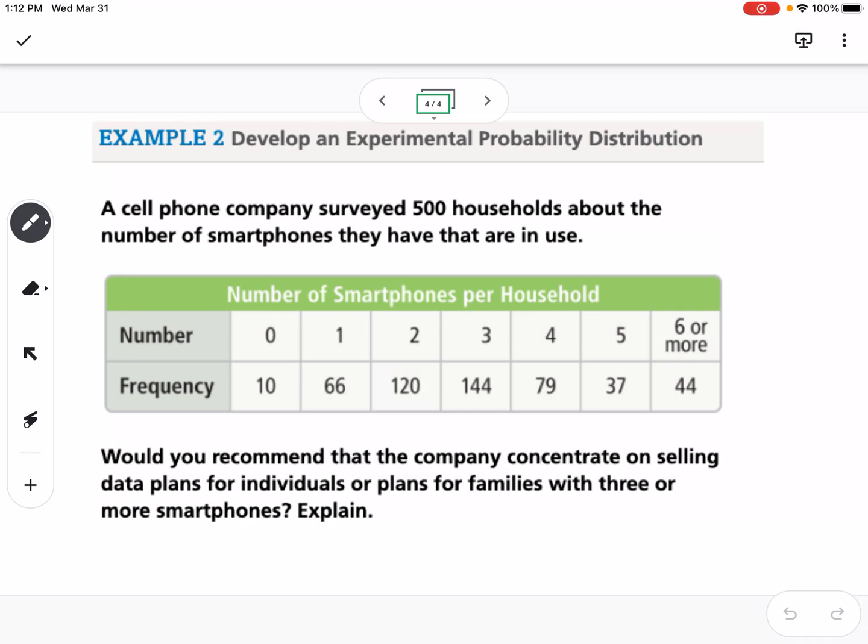The question is, would you recommend that the company concentrate on selling data plans for individuals or plans for families with three or more smartphones? So what we can do with this data is figure out what percent of our total 500 households fall into each category. Zero phones would be 2% because we take 10 out of the 500. One phone would be 13%, two phones 24%, three phones would be 29% of households, four phones would be 16%, five phones would be 7%, and six or more would be 9%.